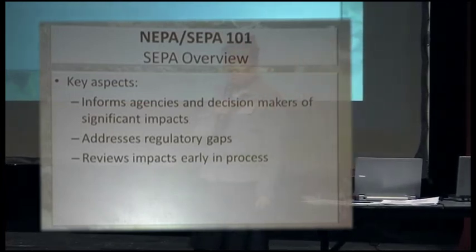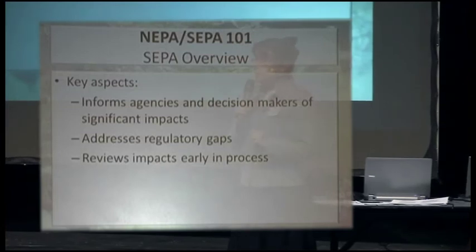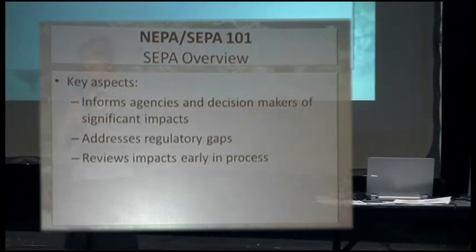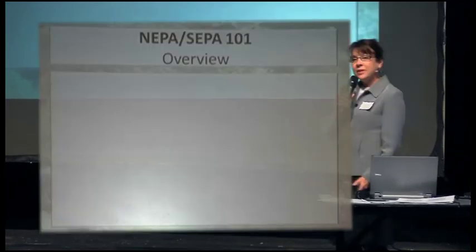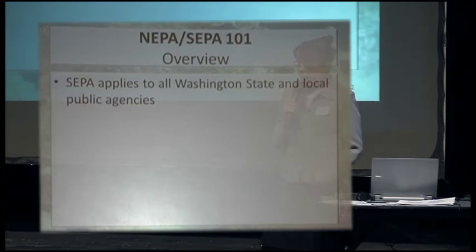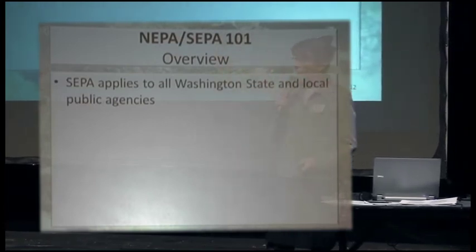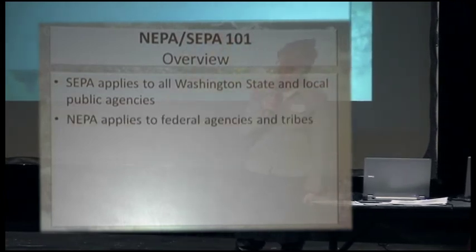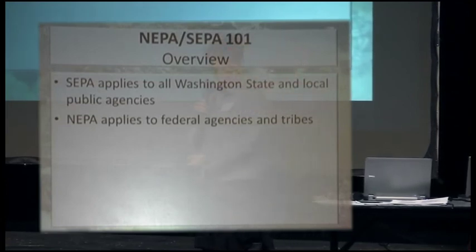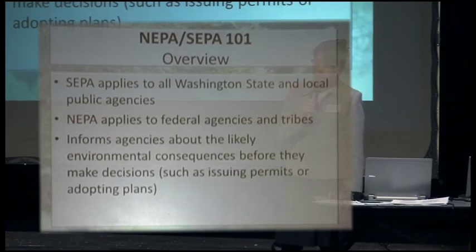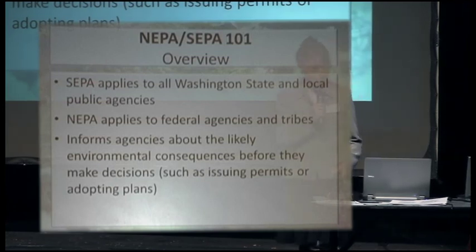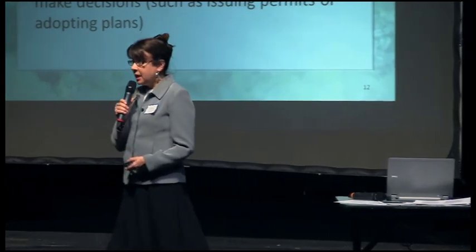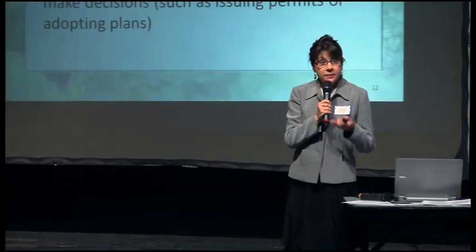Very importantly, the impacts are identified early. Sometimes before, it wasn't until we got to the permit stage — months, perhaps years later — that you were trying to identify what the impacts are of a project. SEPA, the State Environmental Policy Act, applies to Washington State agencies and local public agencies like Whatcom County. NEPA applies to the federal agencies and the tribes, and you'll be hearing from the federal agency here with the Corps, with Randall Perry during our panel. What comes out of this process for the agencies is that it informs us about the environmental consequences before we make the permit decisions, so we as agencies issuing permits rely tremendously on this foundational document, the EIS.